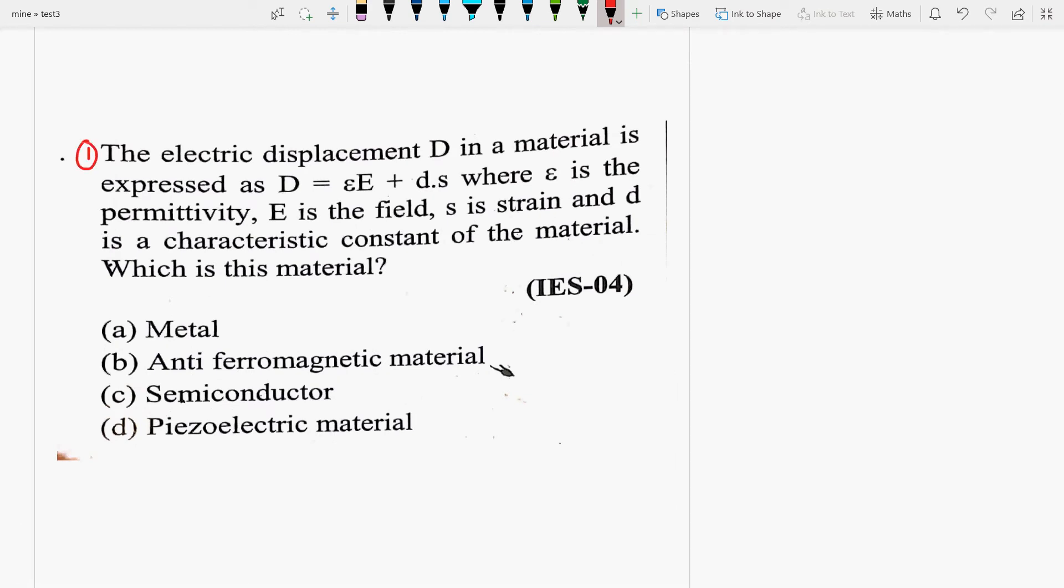First question hai, the electric displacement in a material is expressed as D is equal to epsilon E plus d dot S. Where epsilon is the permittivity, E is the field, S is the strain, and d is a characteristic constant of the material. So which is this material? Metal, antiferromagnetic, semiconductor, or piezoelectric material.